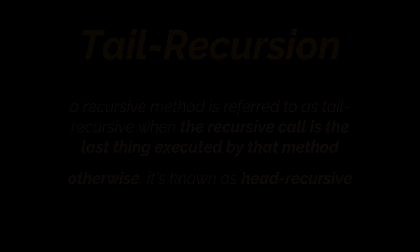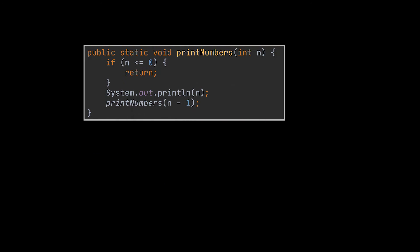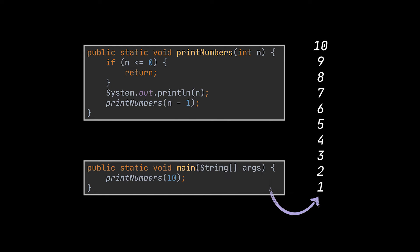Take the print numbers method you see in front of you as an example. This method will keep printing the integers starting from a given number until the number reaches one. So if the input of this method is 10, the output will be the numbers from 10 all the way to 1.